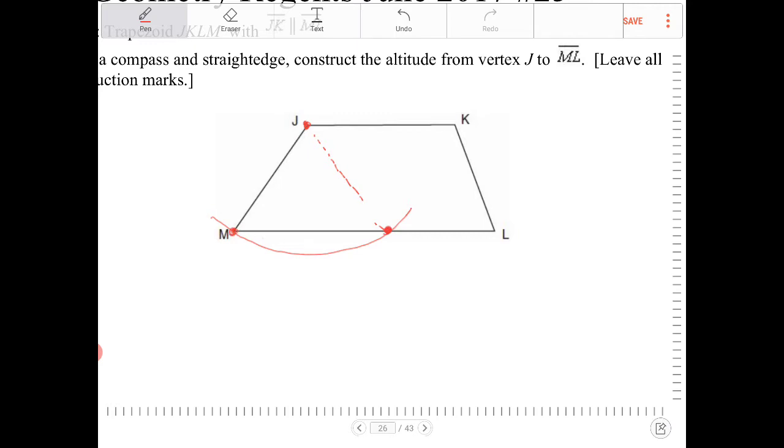You're going to keep the compass setting the way it is, place your pin now on point M. And with the same compass setting, do not alter it, you're going to make a marking like so. Let me do a little better job at that.